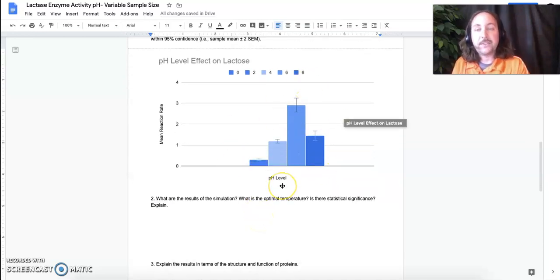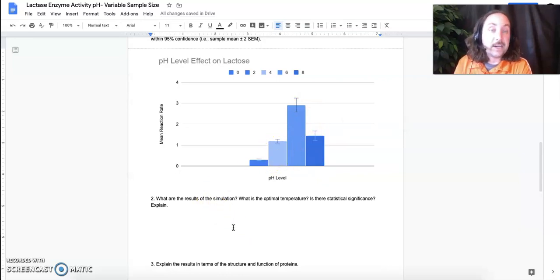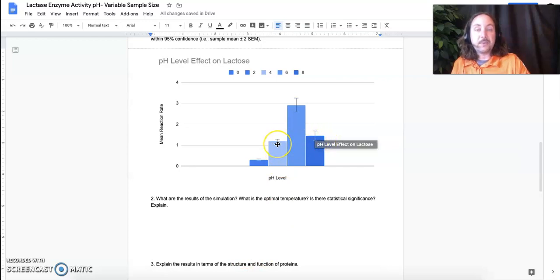You could have generated a graph like this. Again, there should have been a label here, mean reaction rate in millimoles per minute. But again, we have a graph and we have nice error bars. Again, the error bars should be talked about in terms of the difference between the means. There is no statistically significant difference between the value for a pH of four and a pH of eight.